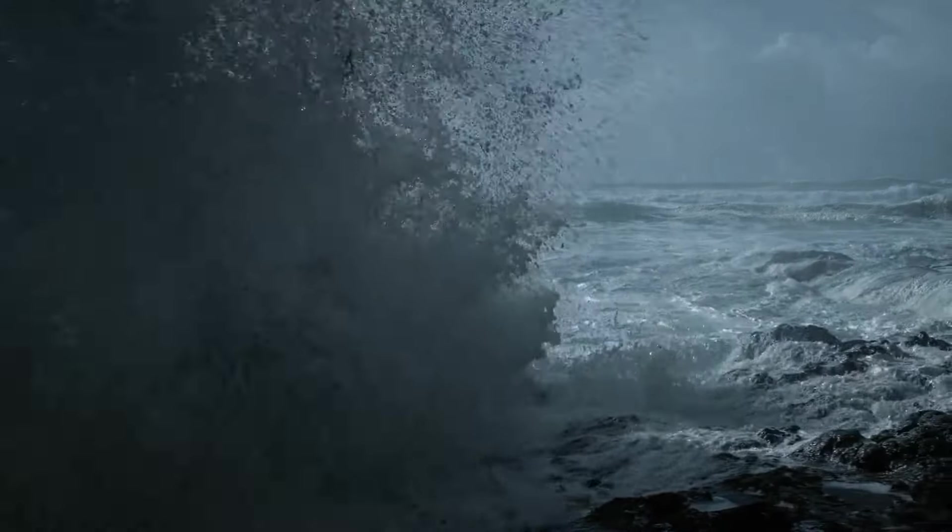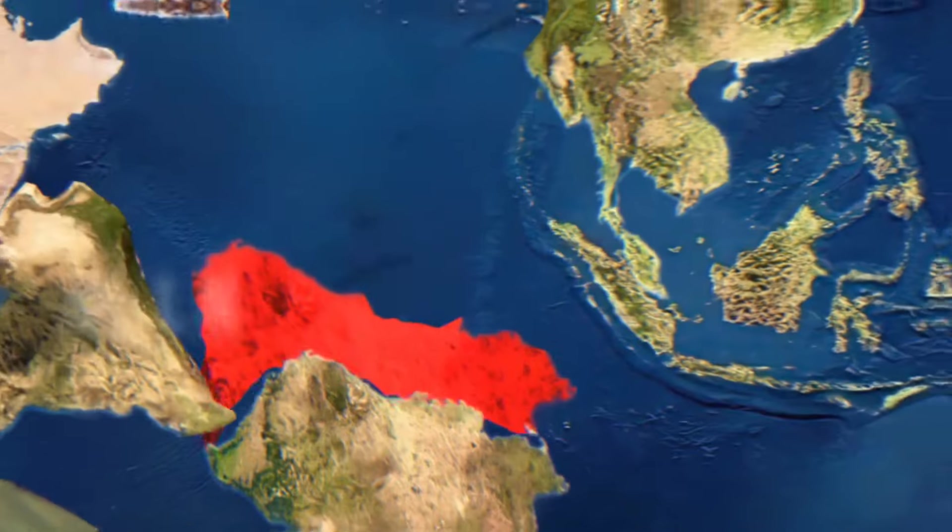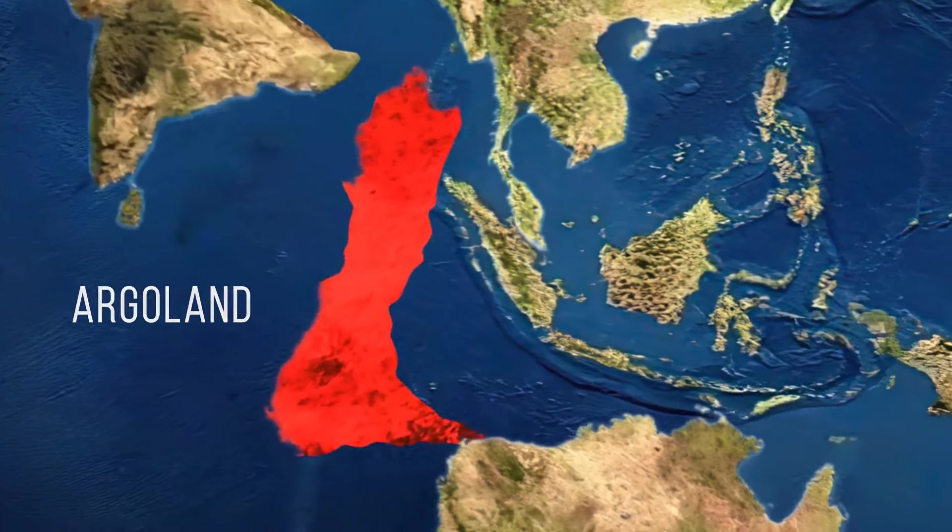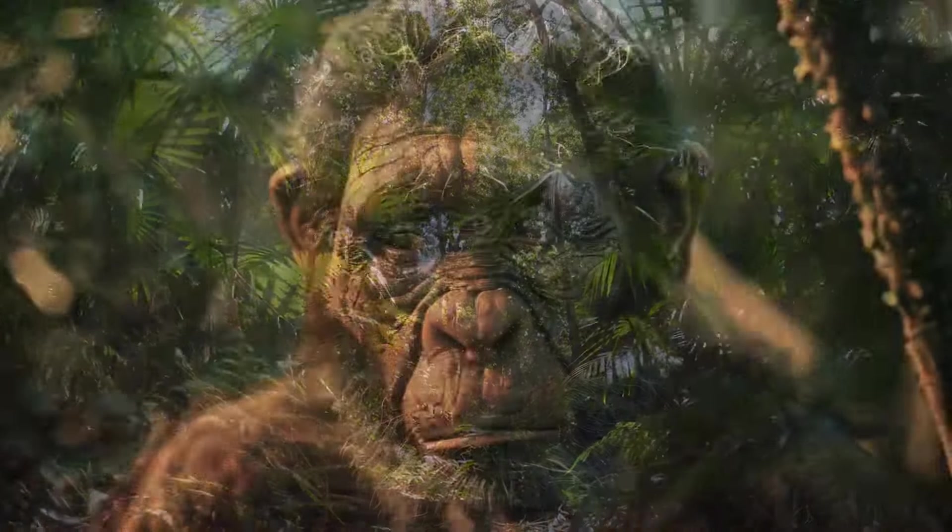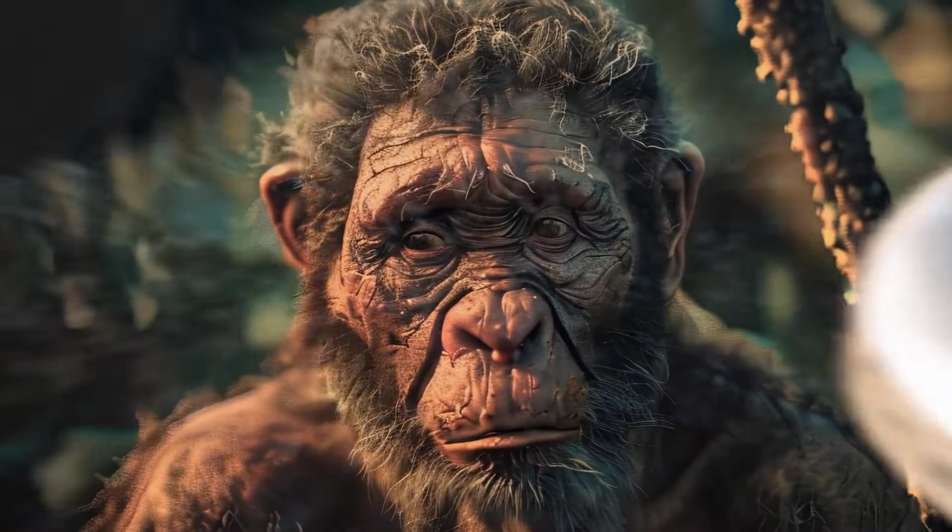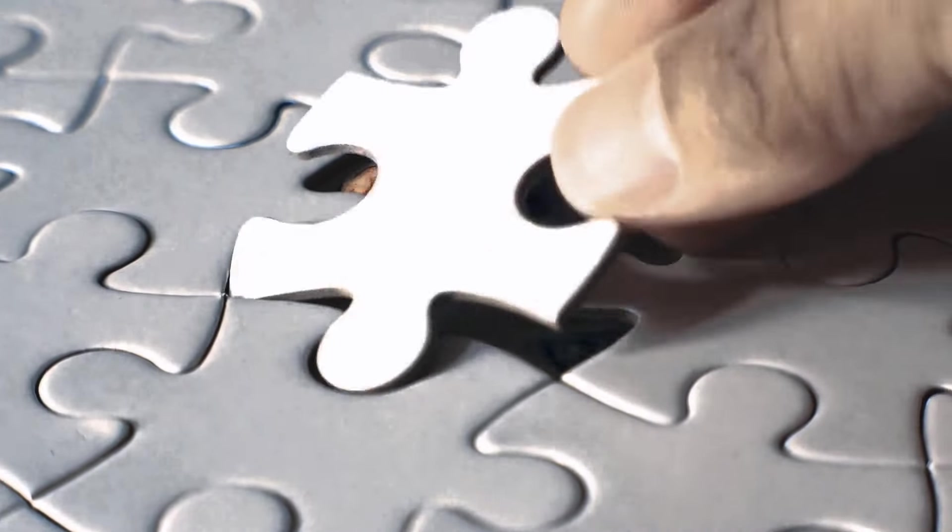Surprise! There's more than seven continents on our planet. Argoland, a hidden continent, may help us understand how our planet will look in the future. To find out how it hid from us and what secrets it holds, you'll just have to keep watching.